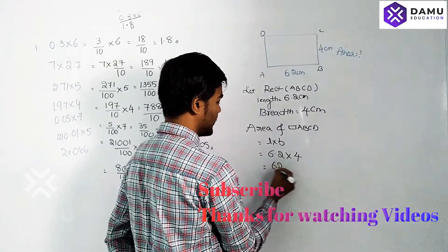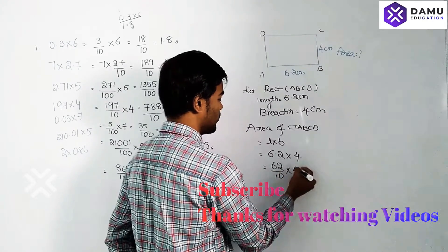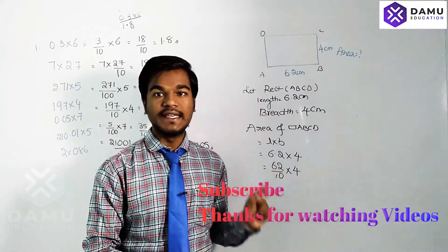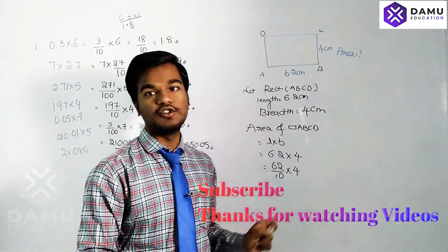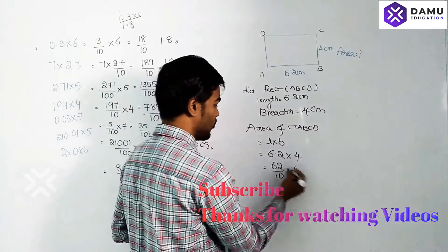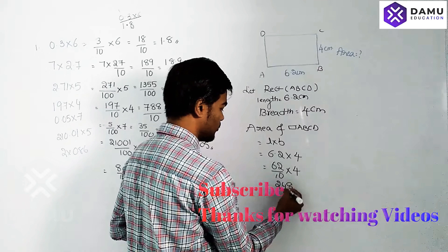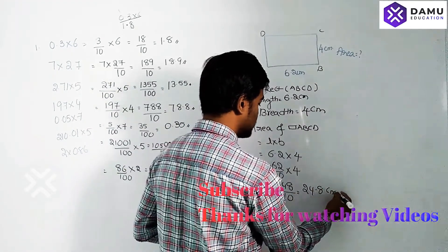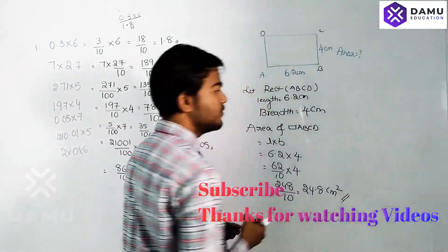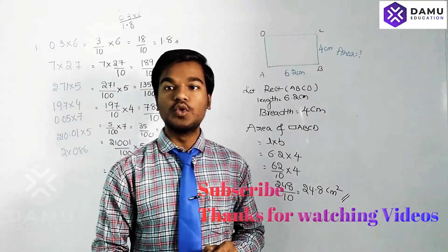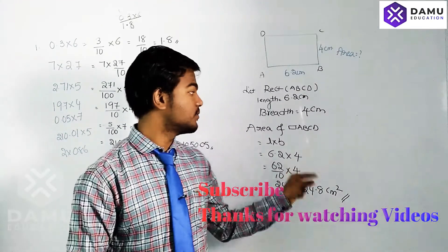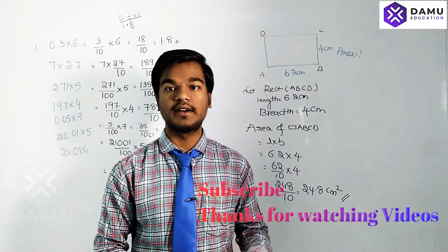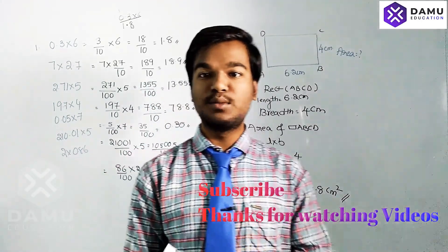So 6.2 into 4: we write 62 by 10 into 4, because after 6.2 only a single decimal place is there, so we divide by 10. 62 into 4 gives 248 by 10, which equals 24.8 centimeter square. It is centimeter square because length and breadth are both in centimeters, so centimeter into centimeter gives centimeter square. Thanks for watching, please support us and subscribe.